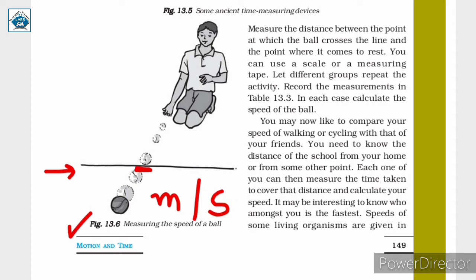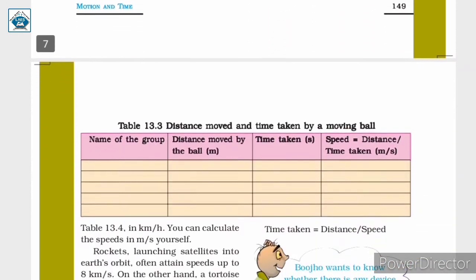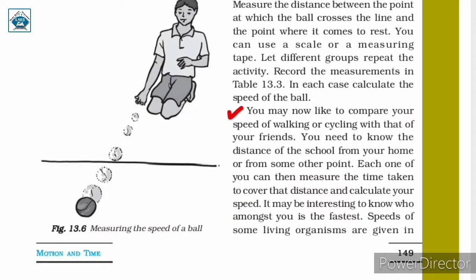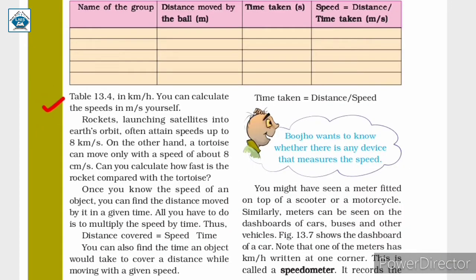Various groups can repeat this activity and record measurements in table 13.3. You may also like to compare your speed of walking or cycling with that of your friends. Measure the distance of your school from home, then each person measures the time taken to cover that distance and calculates their speed. It may be interesting to know who amongst you is the fastest.